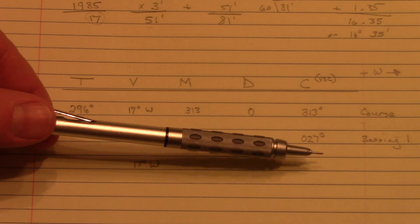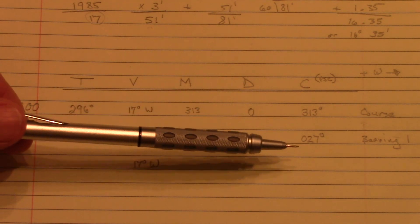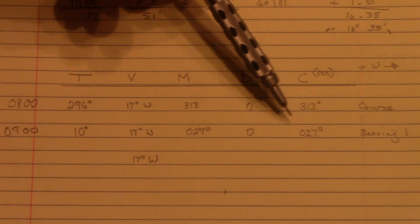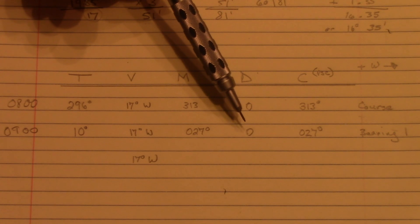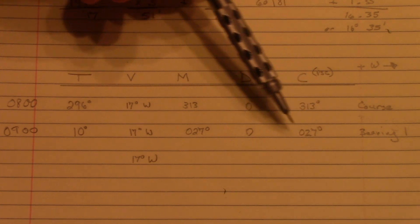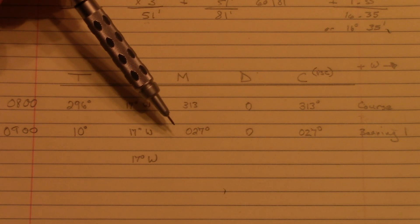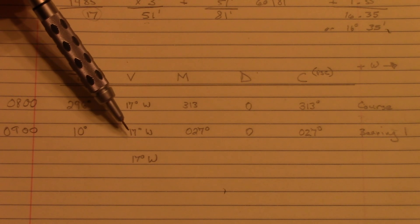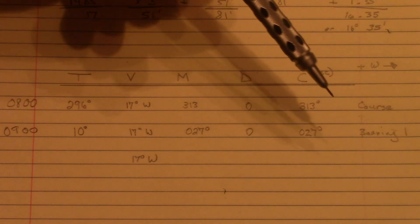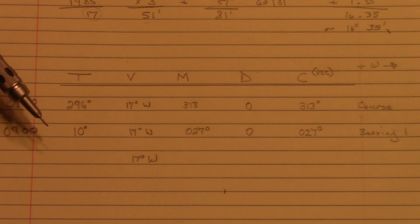Recall from the word problem that our first bearing of 27 degrees is taken at 0900, and that 27 degrees is per ship's compass. We correct for deviation: 27 degrees with 0-degree deviation — recall that deviation is based on heading course, not on bearing, so the deviation correction remains 0 degrees. That gives us 27 degrees magnetic. Applying the 17-degree westerly variation correction by subtracting, we get 10 degrees true. Our first bearing on Point Judith light is 10 degrees true.